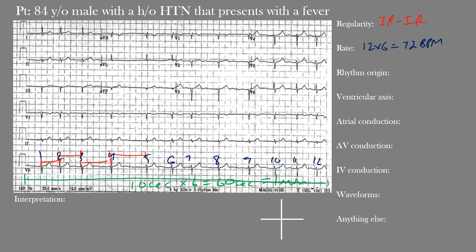For rhythm origin, we have narrow QRS complexes here, so the rhythm must be supraventricular in origin. However, you can't really make out any P waves, so it's certainly not sinus rhythm — it must be coming from somewhere within the atria or AV junction. Looking at lead I, lead II, and AVR, there are no clearly defined P waves before our QRS complexes and no inverted P waves in AVR to suggest sinus rhythm. Our origin is from the atria or AV junction, not ventricular, because our QRS complexes appear normal.